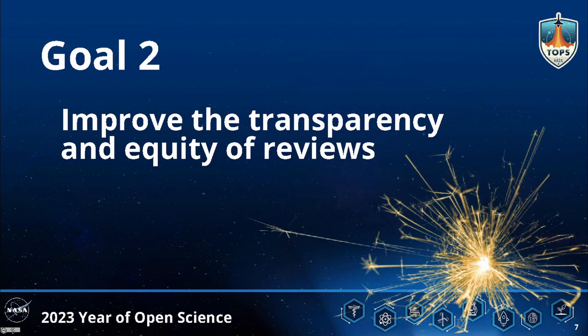Goal two is designed to create a more equitable and open scientific future, tailored for each agency. We want to believe science is a level playing field, but we know that reviews perhaps aren't as fair as they should be. For funding agencies, this could include looking at proposal panel reviews that determine who is funded. This goal asks, where possible, to collect and open up anonymized data about review outcomes, including information disaggregated by gender, race, career stage, to better assess how decisions are being made.